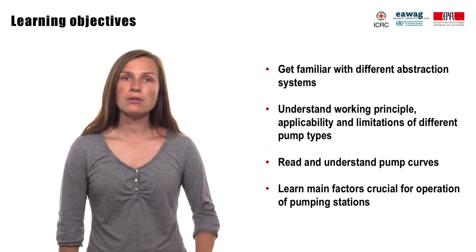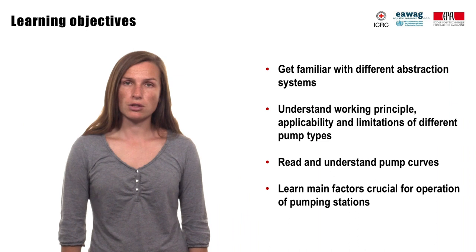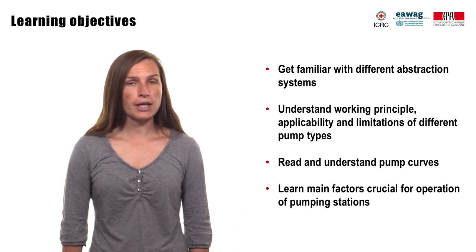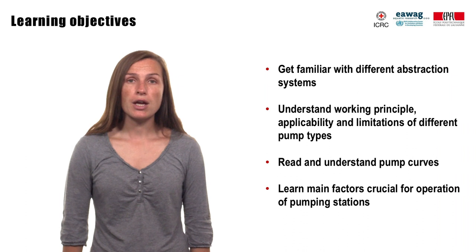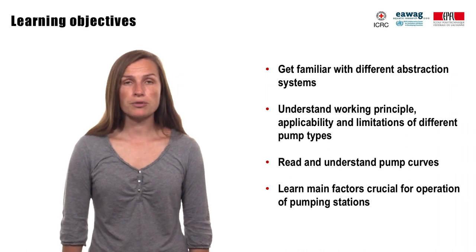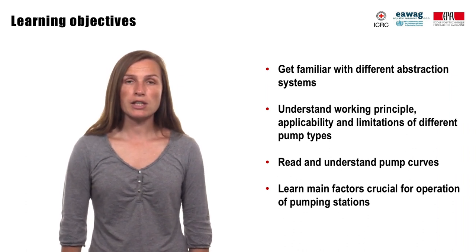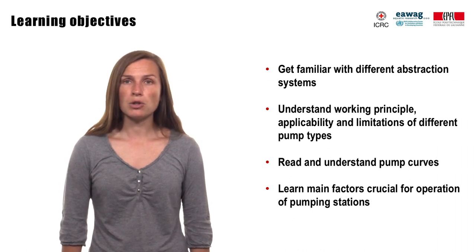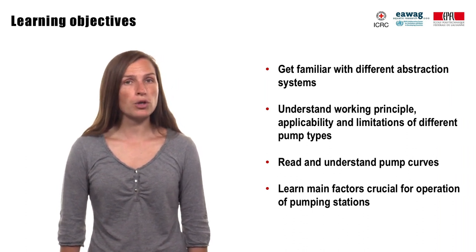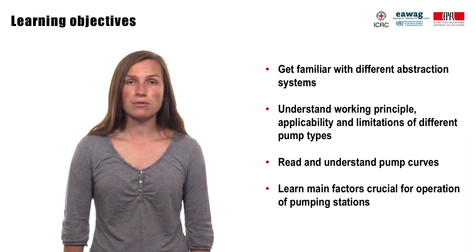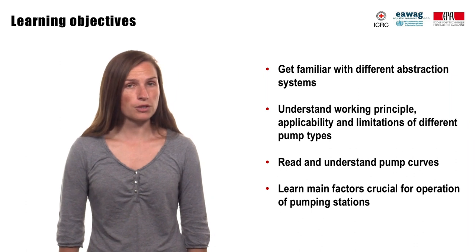Today we will look at the different water abstraction technologies, such as gravity supplies, pump types and energy sources needed to drive them. We consider in more detail the basic working principle of different pump types, as well as their applicability and limitations. Finally, we will look at how to read and understand the pump curves needed for selecting and specifying an appropriate pump, and consider main factors influencing operation of a pumping station.